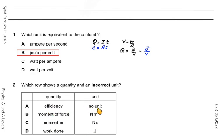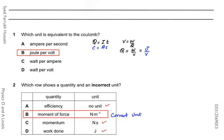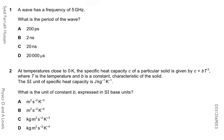In the next question, you are given quantities and units, and must find the option with an incorrect unit. Efficiency has no unit — correct. Moment of force is force times perpendicular distance, so it should be newton·meter, but they have written N·m⁻¹ — that is incorrect. Momentum is mass times velocity = kg·m·s⁻¹, equivalent to newton·second — correct. Work done is in joules — correct. So option B has the incorrect unit.